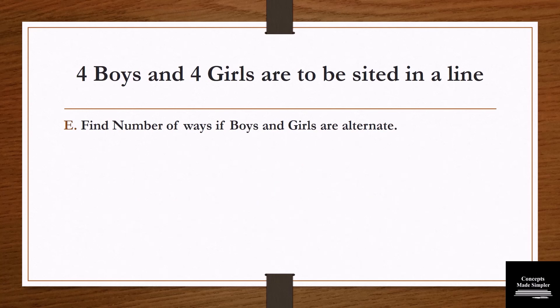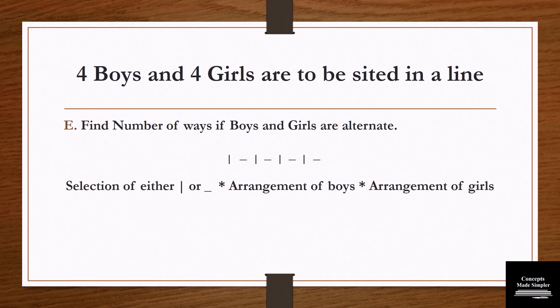The next question: find the number of ways if boys and girls are alternate. The arrangement alternates between boys and girls. We first do a selection of who occupies which position type, then arrange the boys, then arrange the girls. Final solution: 2C1 (selection of arrangement type) × 4 factorial (arrangement of boys) × 4 factorial (arrangement of girls).